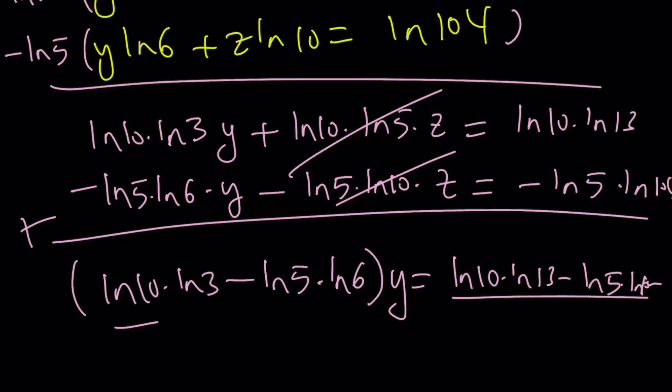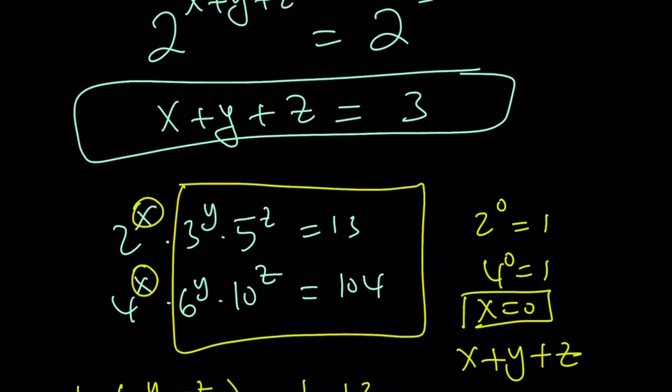And then divide both sides by this, and you'll get the y value, which is going to be very, very logarithmic, and then you'll find the z by substitution or by subtracting whatever, and then add them up, and guess what? At the end, you're going to get a 3. And you can go ahead and check.